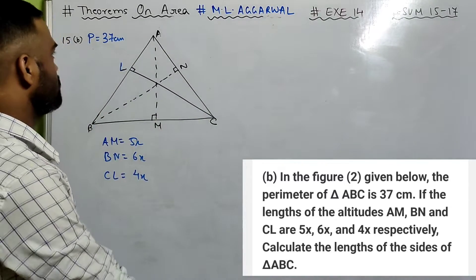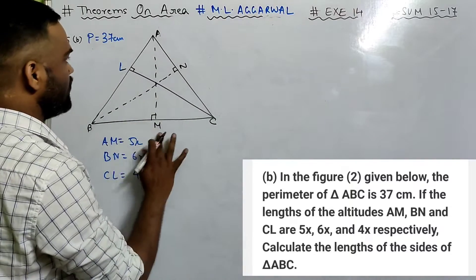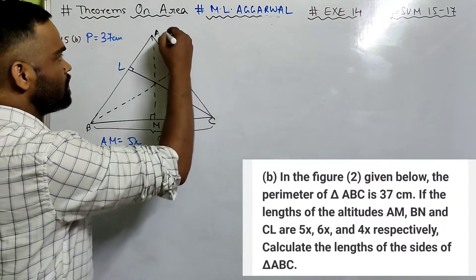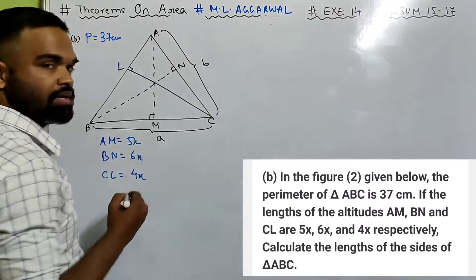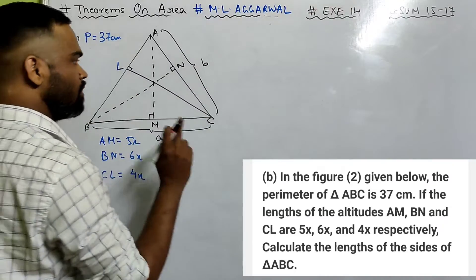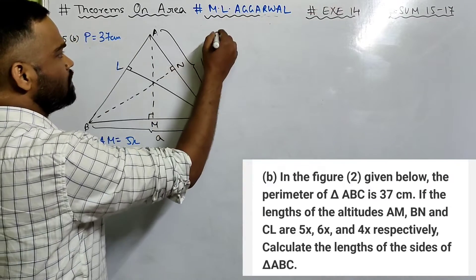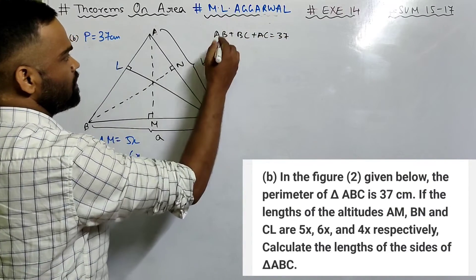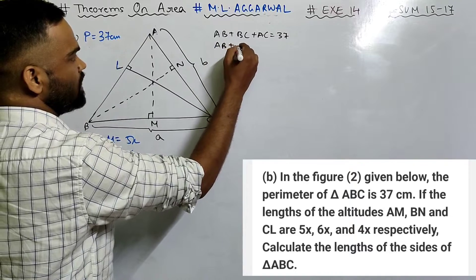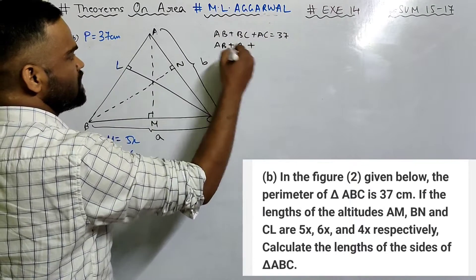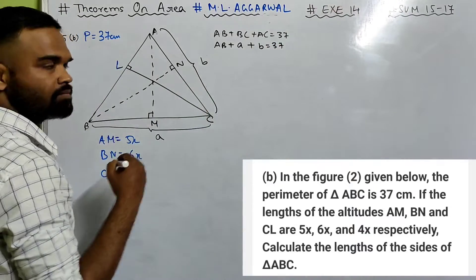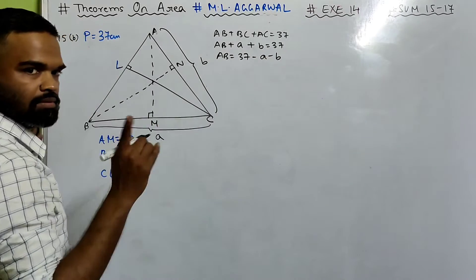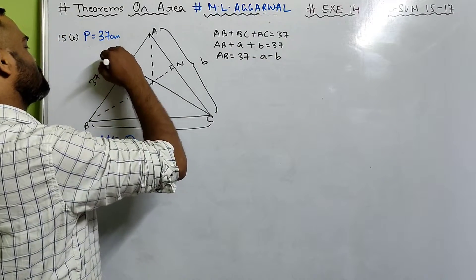Look carefully. Let AB plus BC plus AC equal 37. Let BC equal a and AC equal b. So AB will be 37 minus a minus b.